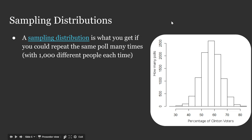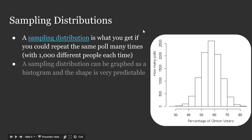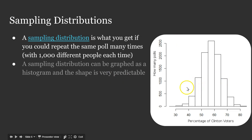Start off with a definition. A sampling distribution is what you get if you could repeat the same poll many times over — every single time you ask the same questions, you have the same person doing the interviews, but you contact 1,000 different people each time. The result we would expect is a slightly different proportion of voters that would prefer Clinton. Most of the time, if we did this poll over and over again, we'd discover that about 55% of likely voters prefer Clinton.